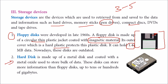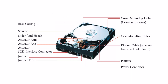Now we have the hard disk, made of metal disks coated with metal oxide, used to store bulk data — hundreds of gigabytes. The hard drive components include: the base casing, spindle, slider, actuator arm, actuator axis, actuator, SCSI interface connector, jumper and jumper pins, power connector, multiple platters stacked on one another, ribbon cables attaching heads to the logic board, and case mounting holes for placing it in the cabinet.